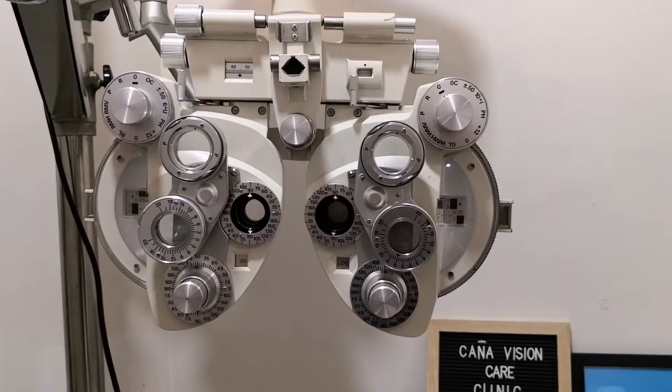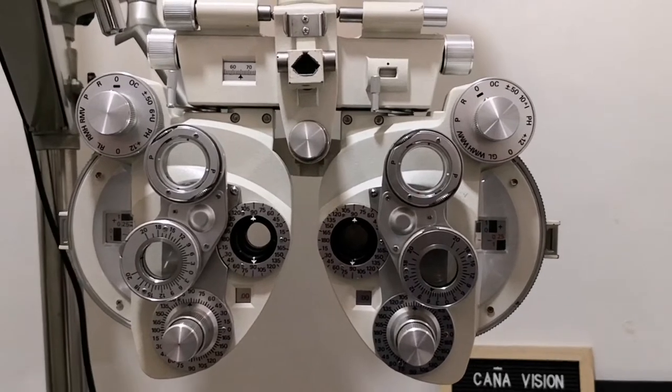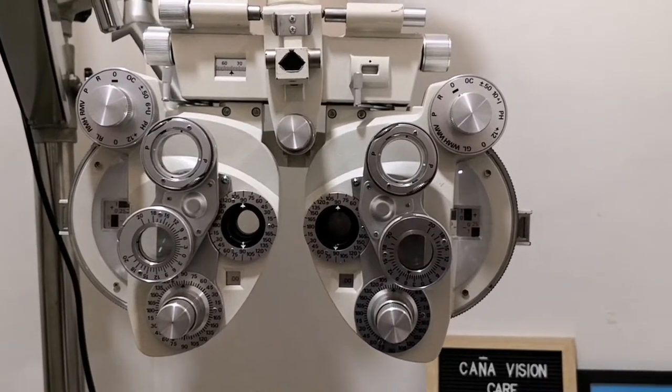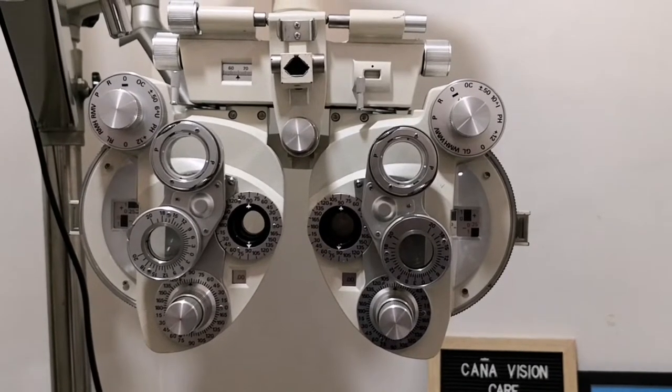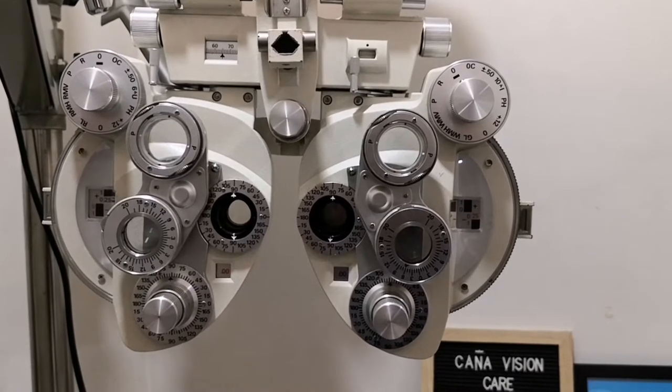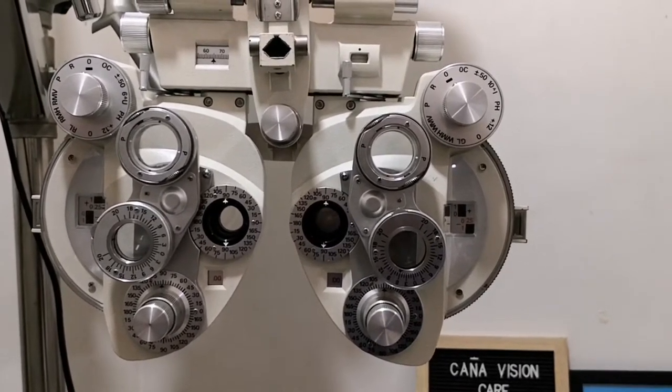The phoroptor is the main part for the refraction division of eye examination. The phoroptor is a complex lens holder designed to allow the examiner to change lenses efficiently and easily. It consists of four groups of control.